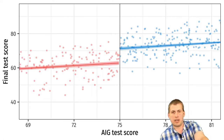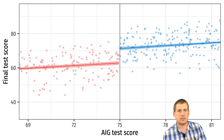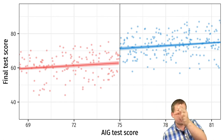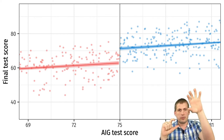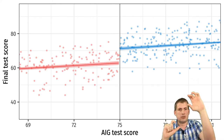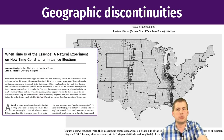If we zoom in to just within about five points of the threshold, you can see it even more clearly. People who got 74 and people who got 76 are essentially the same people, but the people who got 76 have slightly higher final test scores. You can zoom in and just measure that gap — and that's the thing you care about most.